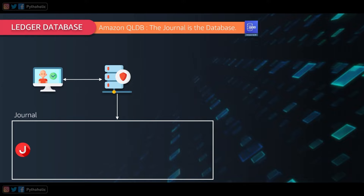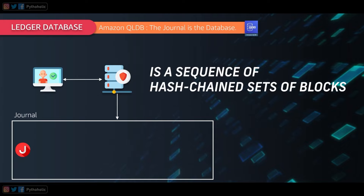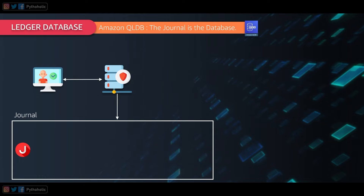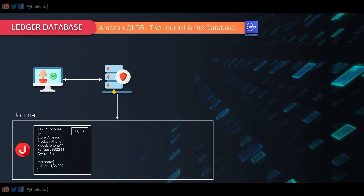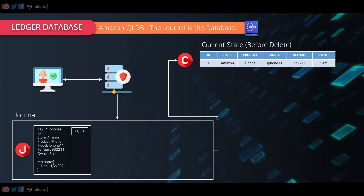In QLDB, when you write data or perform an operation it is append-only, and every block of data is a sequence of hash-chained sets of blocks. Your client application connects to the ledger to run transactions like insert, update, or delete. For the first transaction — an insert for phones — we store ID, product, model, reference number, owner, and metadata of date and time. This is written in sequence to the journal (denoted J). The data is then materialized into a table view so you can query the current state.